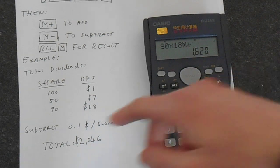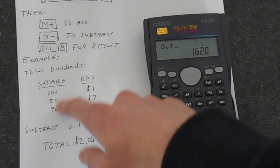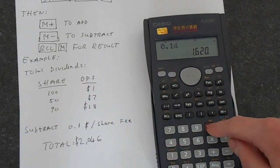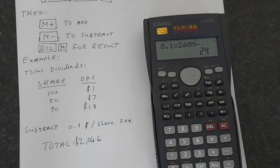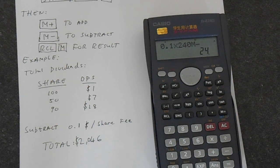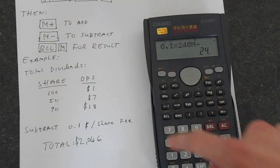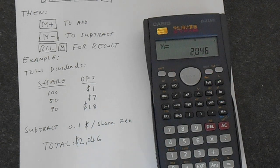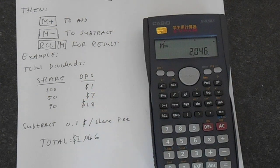The next result we want to subtract. So we're doing 0.1 times the total number of shares. That is, of course, 240 when you add those up. So 0.1 times 240. Then if we press Shift, then M-, that's subtracted that result, 24, from memory. And let's get our total. So just do Recall. The Recall button is here. And then we press that, and it says M is 2046. And that is our answer. So we've totaled this using our independent memories.